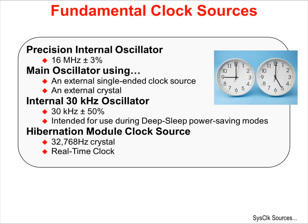No external oscillator or crystal is required. The main oscillator uses an external single-ended clock source or an external crystal. The precision is limited by that of the external source. The internal 30 kHz oscillator has an accuracy of plus or minus 50%.